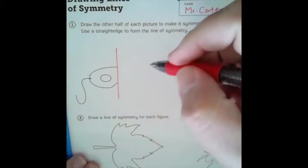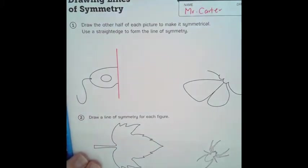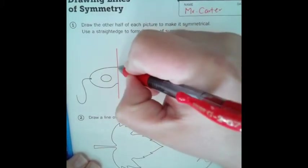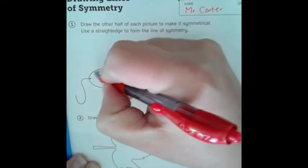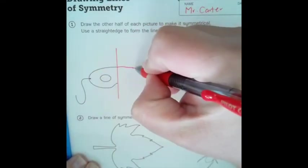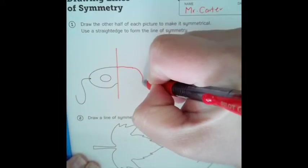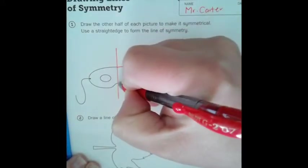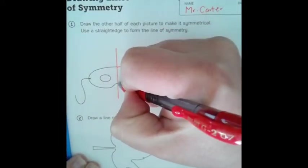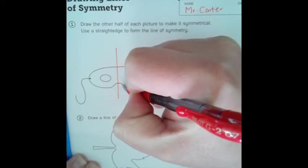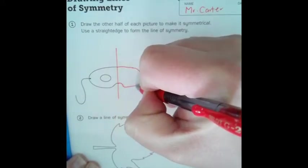Then you just draw the other half to make it look symmetrical. So I'm going to draw this part over here like so. Then I'm going to meet this point here at this line of symmetry. I'm going to go like this. There we go.